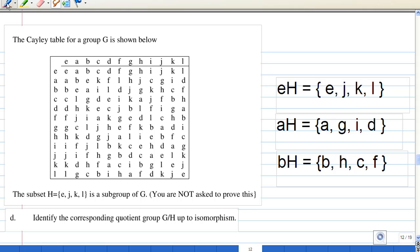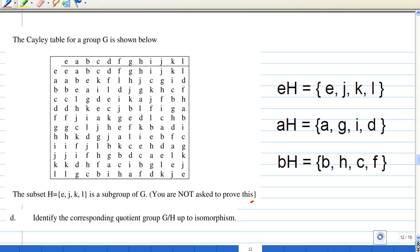So now, in this case, the quotient group G by H consists of three cosets: eH, aH, and bH.